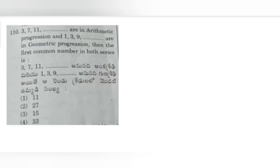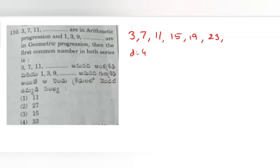Question 110: 3, 7, 11 and so on are in arithmetic progression, and 1, 3, 9 and so on are in geometric progression. The first common number in both series is? For the AP series, the common difference d is 4. Continuing: 3, 7, 11, 15, 19, 23, 27 and so on. For the GP series, the common ratio is 3. Continuing: 1, 3, 9, 27 and so on.